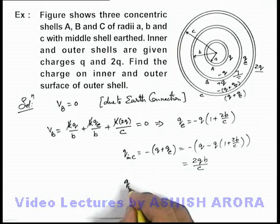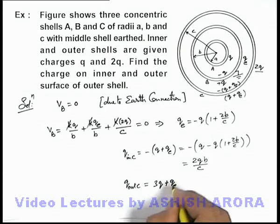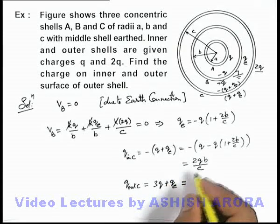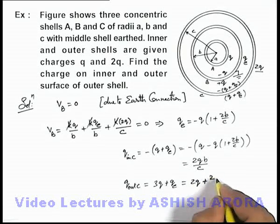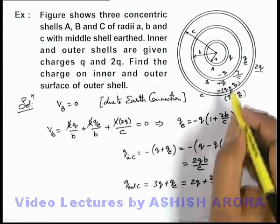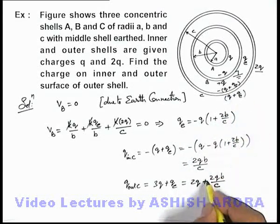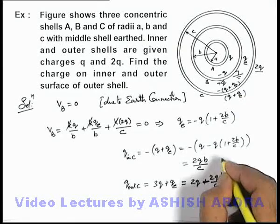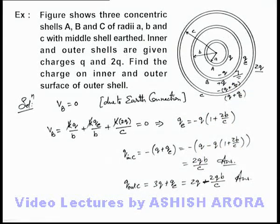On the outer surface of shell C, the charge is 3q + qe. Substituting the value of qe, we get 3q + (−q(1 + 2b/c)), which simplifies to 2q − 2qb/c. Since the inner surface charge is 2qb/c, the induced contribution on the outer surface is −2qb/c, giving a total charge of 2q − 2qb/c on the outer surface of shell C.